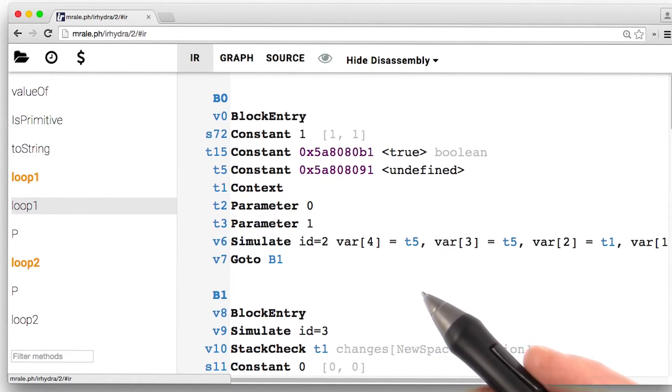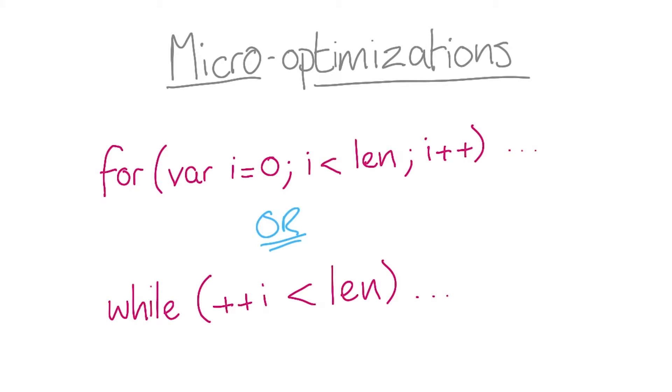But what I want you to take away here is that you should avoid what we call micro-optimizations. Micro-optimizations come about where you try and write code that you think will be a little bit faster for a browser to run.